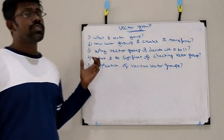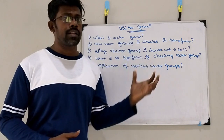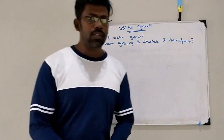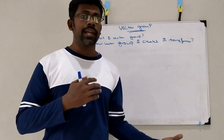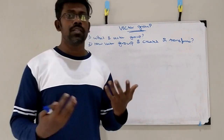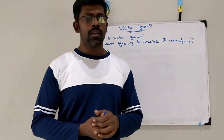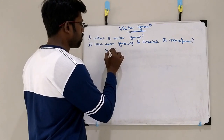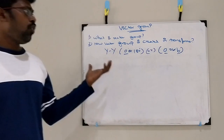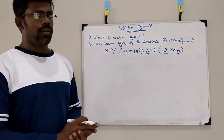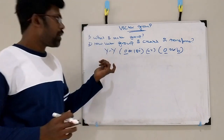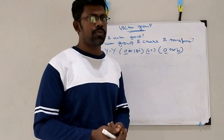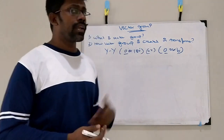Second, we are going to see how vector group is created in transformer. The vector group is created in transformer depending upon the type of winding and type of the connections between the three phases we use. If you consider a star to star transformer, how are we getting this kind of vector group? It is also star to star, but how the vector group is changing — just how it is changing the 180-degree phase shift between the primary and secondary.